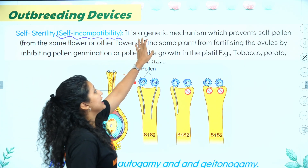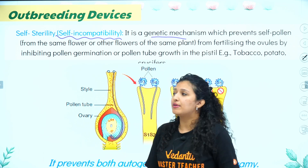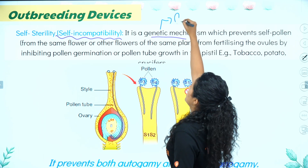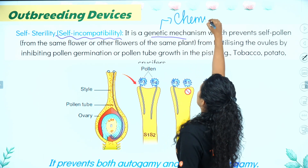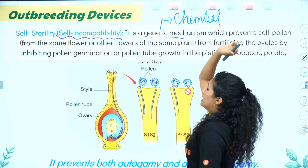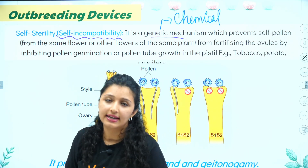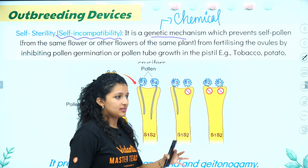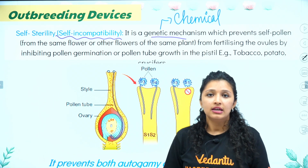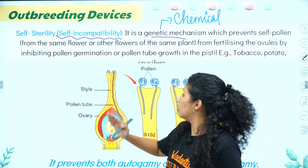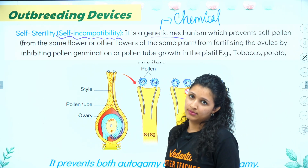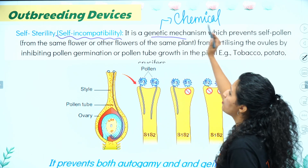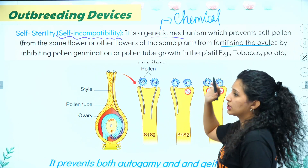In self-incompatibility, the genetic mechanism uses chemical signals: the flower recognizes its own pollen and says 'no chance' — I will not let the pollen tube grow. That is self-incompatibility — it prevents the self-pollen from fertilizing the ovule. The pollen tube is blocked from growing.